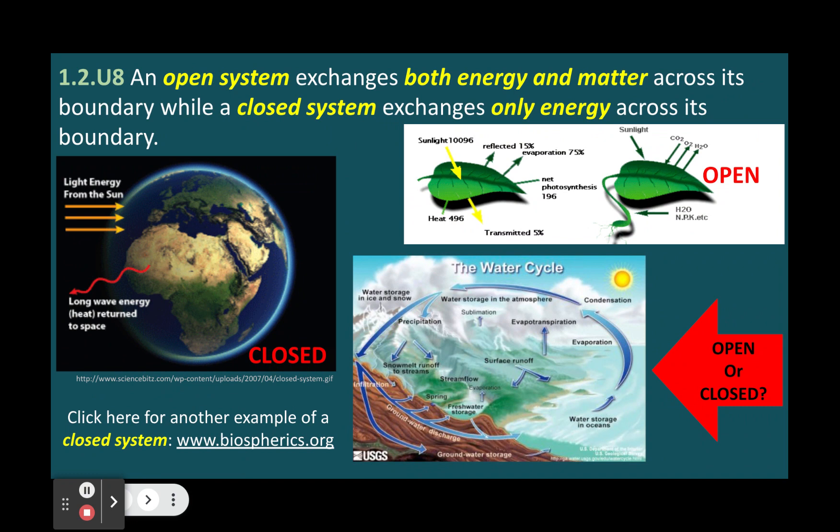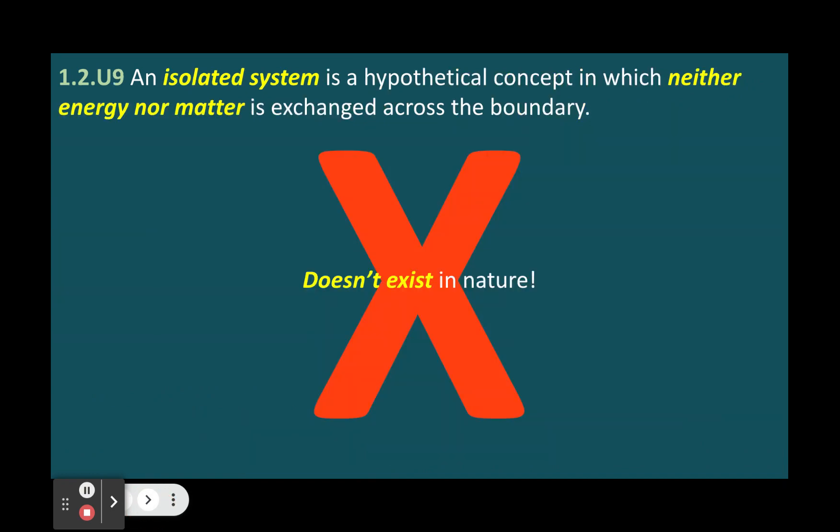A closed system exchanges only energy across its boundaries with its environment, but not matter. For example, a terrarium is a closed system because it receives inputs of light energy from outside, but does not exchange any matter with outside.